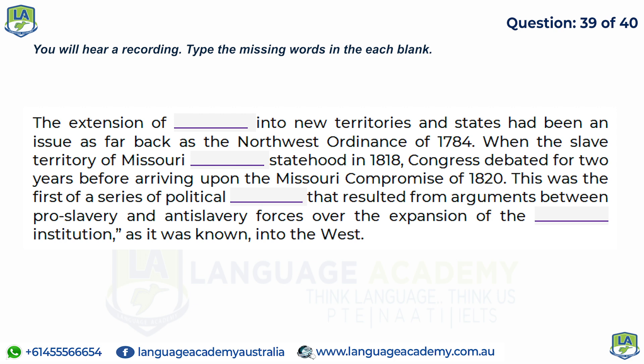The extension of slavery into new territories and states had been an issue as far back as the Northwest Ordinance of 1784. When the slave territory of Missouri sought statehood in 1818, Congress debated for two years before arriving upon the Missouri Compromise of 1820. This was the first of a series of political deals that resulted from arguments between pro-slavery and anti-slavery forces over the expansion of the peculiar institution, as it was known, into the West.